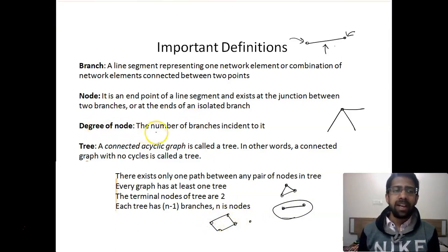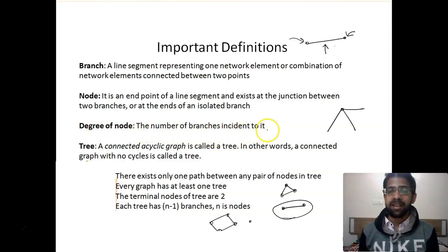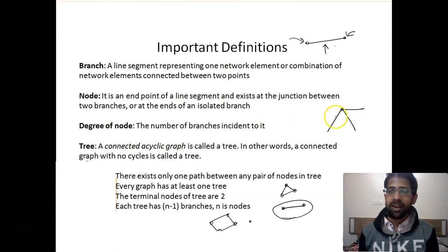What is the degree of a node? The number of branches incident to it is called the degree of the node. Here you have three branches coming at a node, so the degree of this node is three.